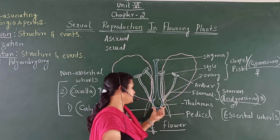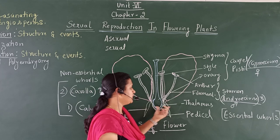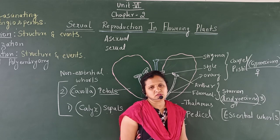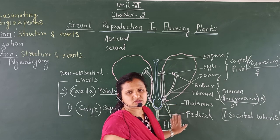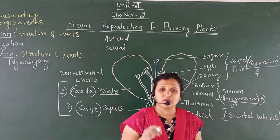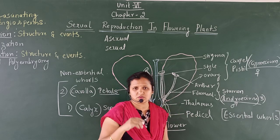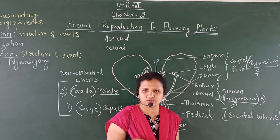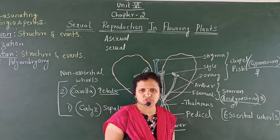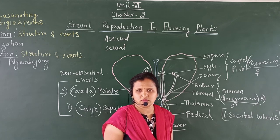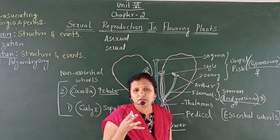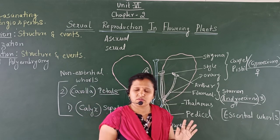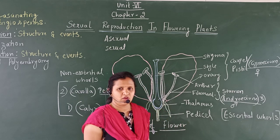These four important parts of the flower are placed on a swollen structure called the thalamus, and the stalk of the flower is called the pedicel. It is very important to know the structure of the flower, because further concepts — how gametes are produced, how gametes fuse to undergo fertilization, forming the zygote, development of fruit and seed — all that we will be studying in the flower itself.